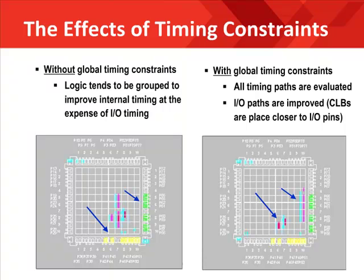On the right-hand side, the same design was implemented with global timing constraints. This required the use of input, output, and internal timing constraints, which force the implementation tools to move the logic closer to the I/O pins to improve on-chip and off-chip timing. Note that the logic is placed closer to the I/O pins due to the input and output timing constraints. Timing constraints are used to communicate performance objectives to the implementation tools, which in turn place and route the design to meet your timing objectives. The pin placement is almost identical to the original implementation, but the placement of the logic is significantly different. The net result is a faster performing design at the expense of a slightly longer implementation time.